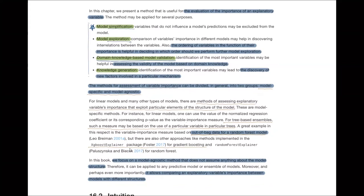The assessment of variable importance can be divided into two groups: model-specific and model-agnostic. Model-specific is quite simple, but the big disadvantage of that approach is that the measurement only applies to some specific modeling approaches. That means it is impossible for us to compare those measurements across different model approaches.